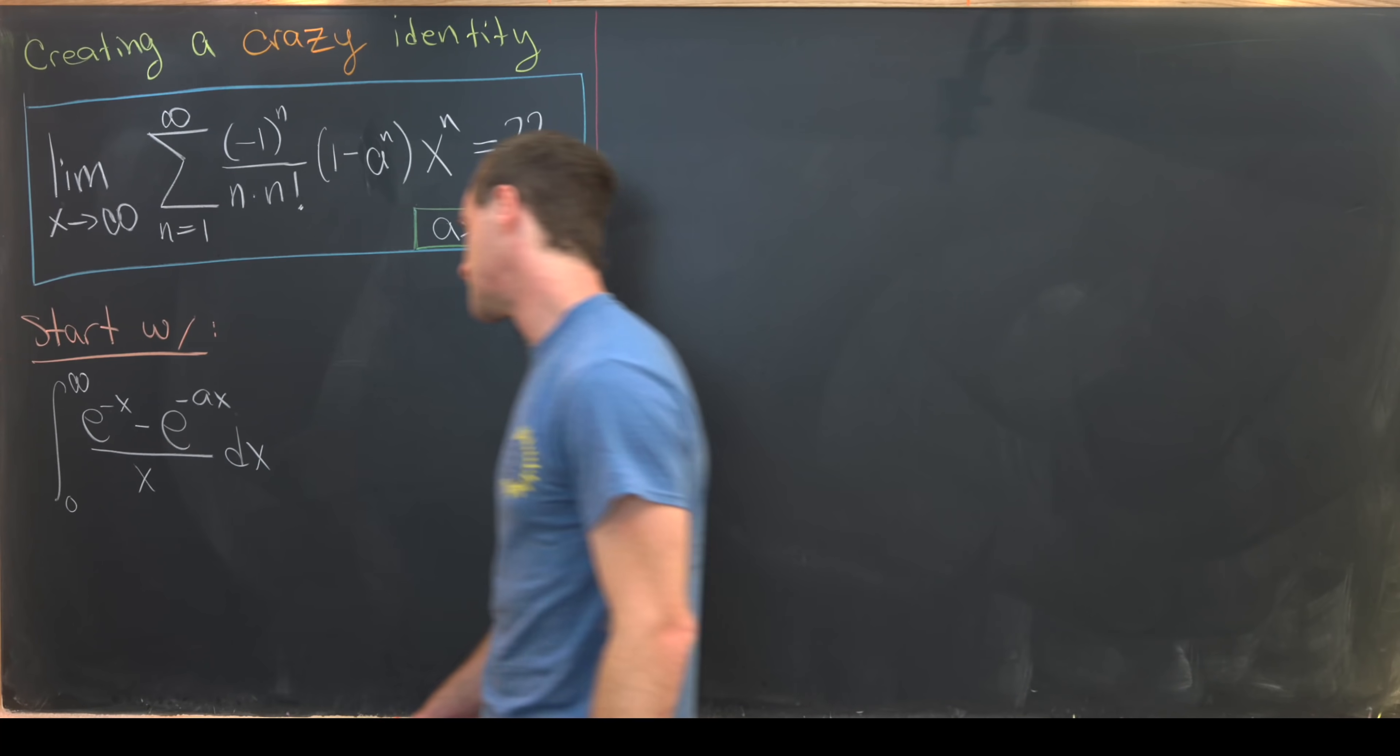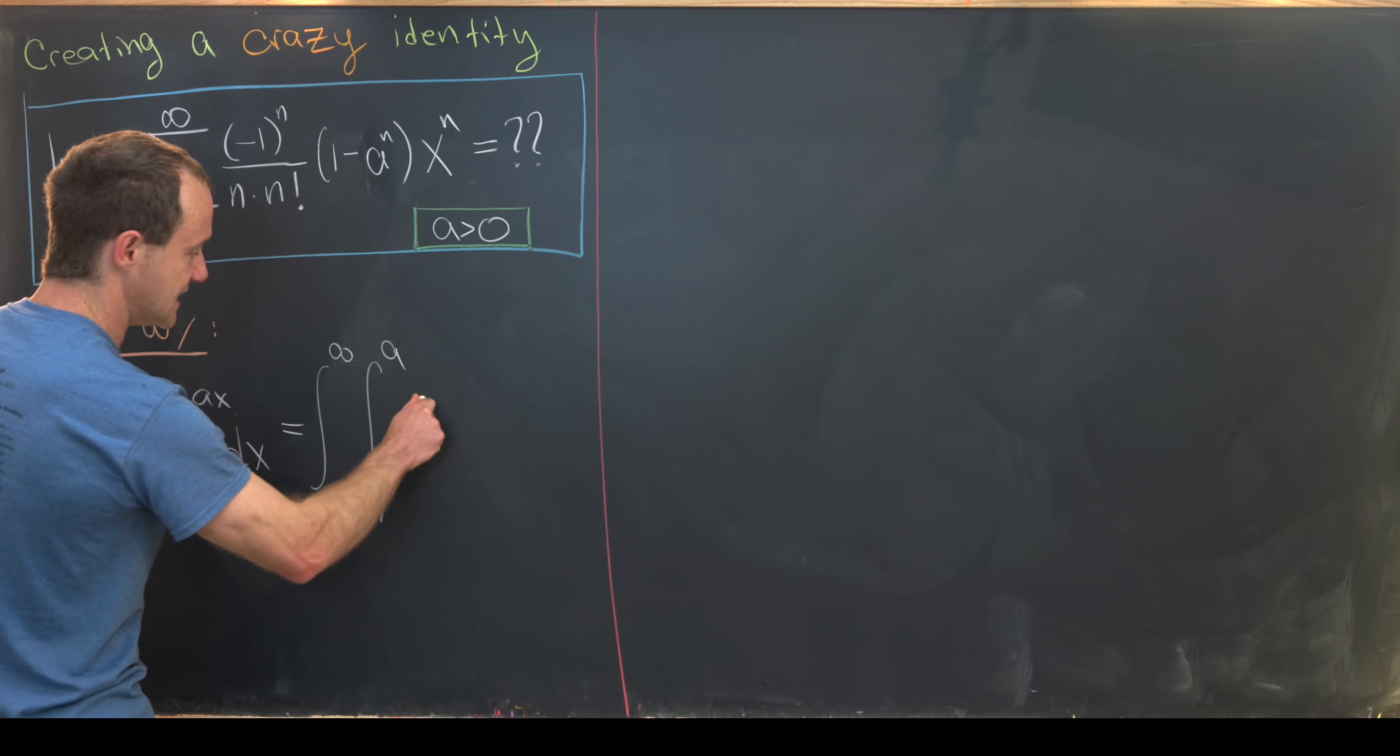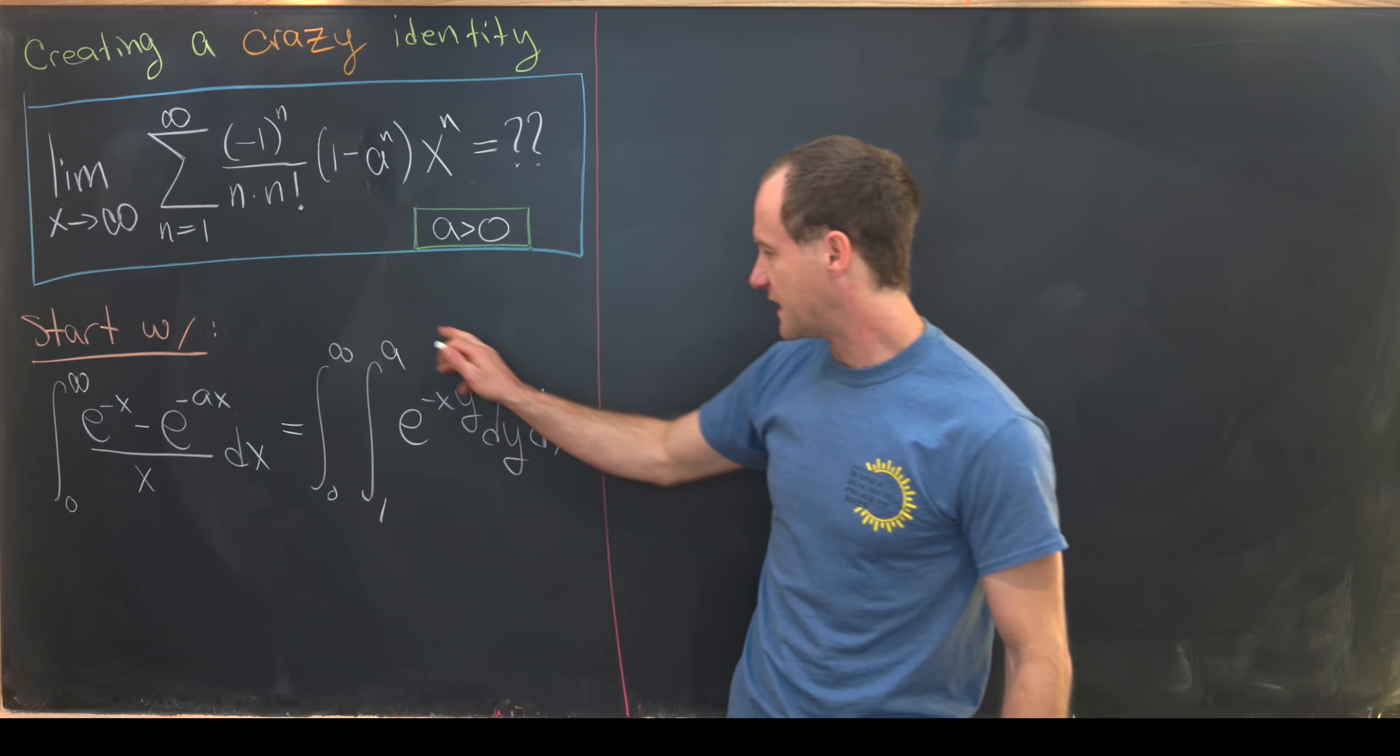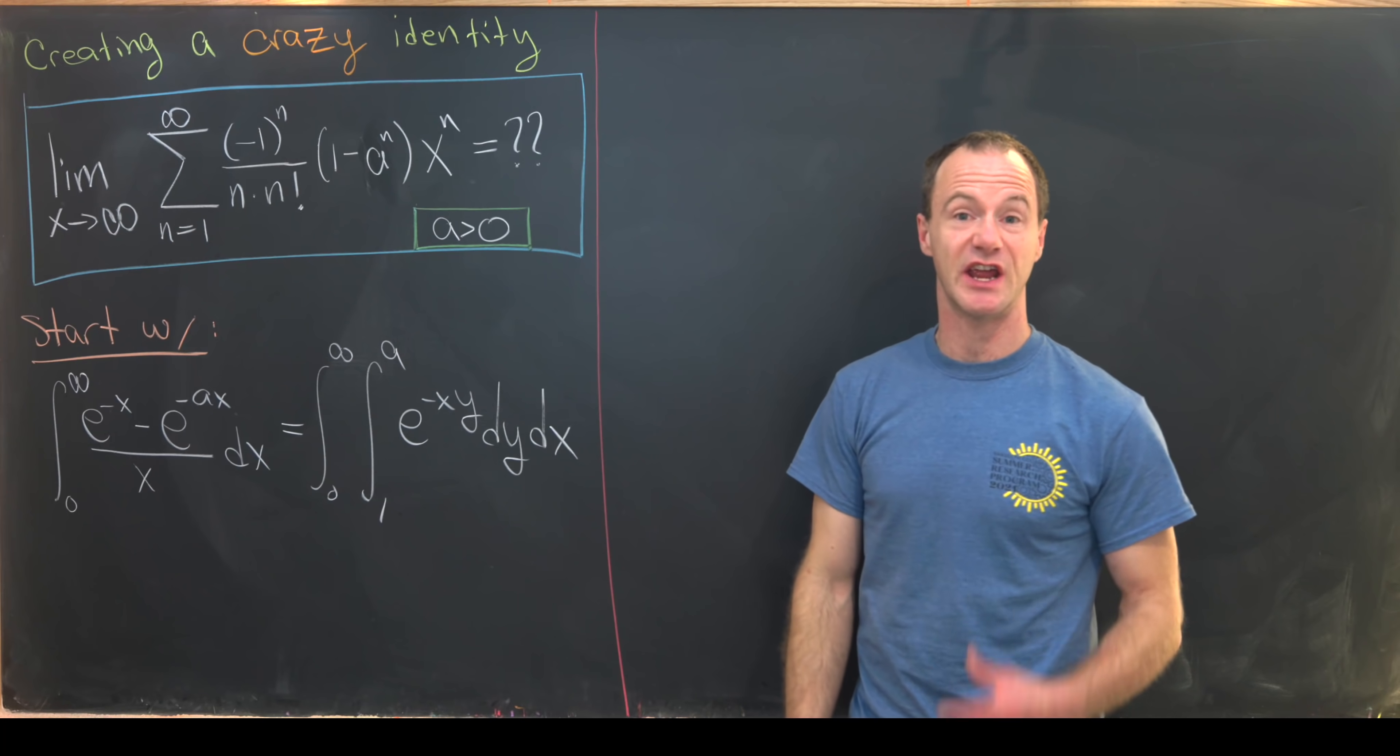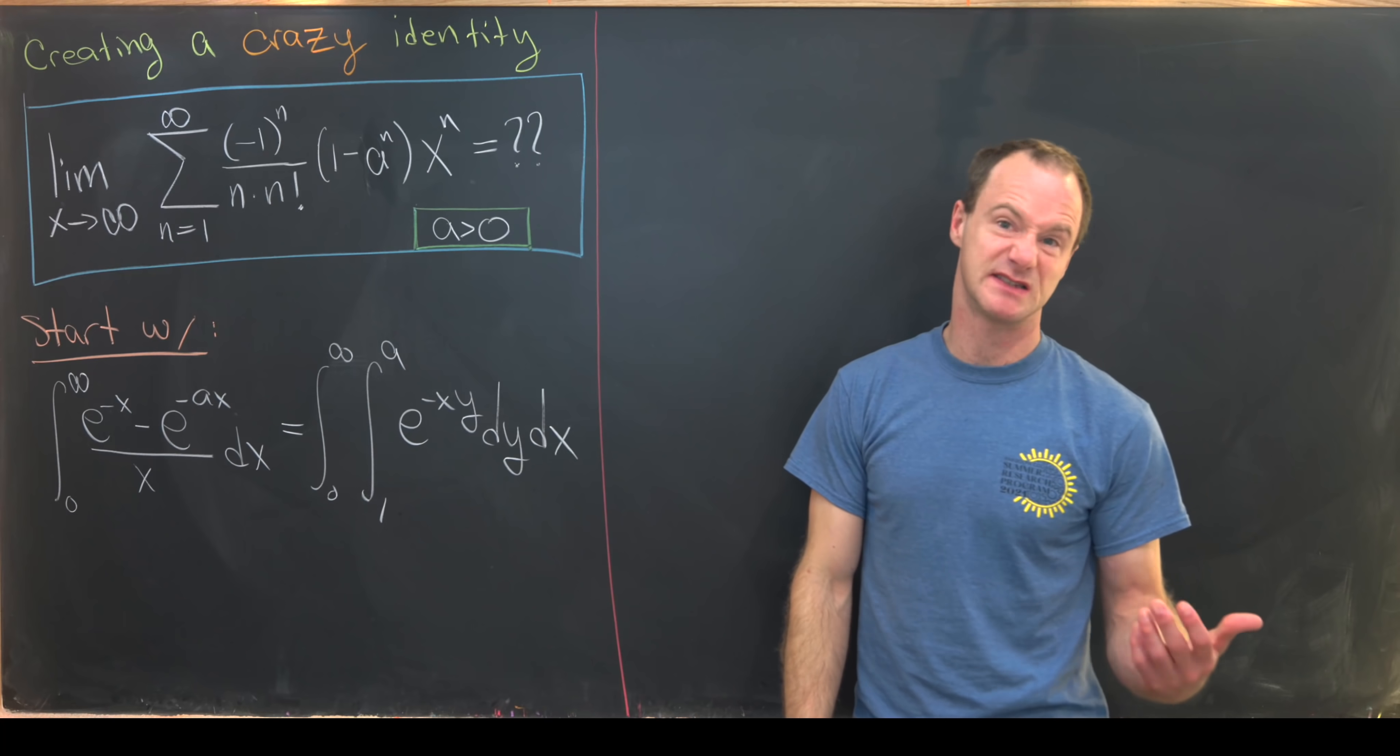Given the fact that we've got a difference of two things in the numerator that look pretty similar, maybe that trick is to push this into a double integral and see where we go from there. This is the same thing as the integral from 0 to infinity and then the integral from 1 to a of e to the minus xy dy dx. If we take the anti-derivative of the inside we'll get an x in the denominator and then we'll evaluate that from 1 to a. I'll let you guys check the details of this step but it's not too tricky.